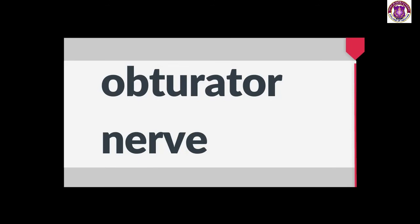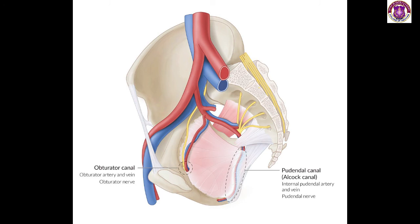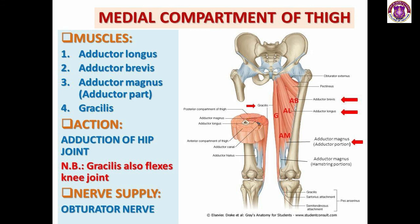The next nerve we will discuss is the obturator nerve. This nerve also arises from the lumbar plexus from L2, L3, L4. It runs forward along the pelvic brim to the obturator foramen and exits into the medial compartment of the thigh to innervate all of the adductor muscles, except the adductor magnus, which is partially innervated by the tibial branch of the sciatic nerve. The obturator nerve also has cutaneous branches that supply the skin of the proximal part of the medial thigh.